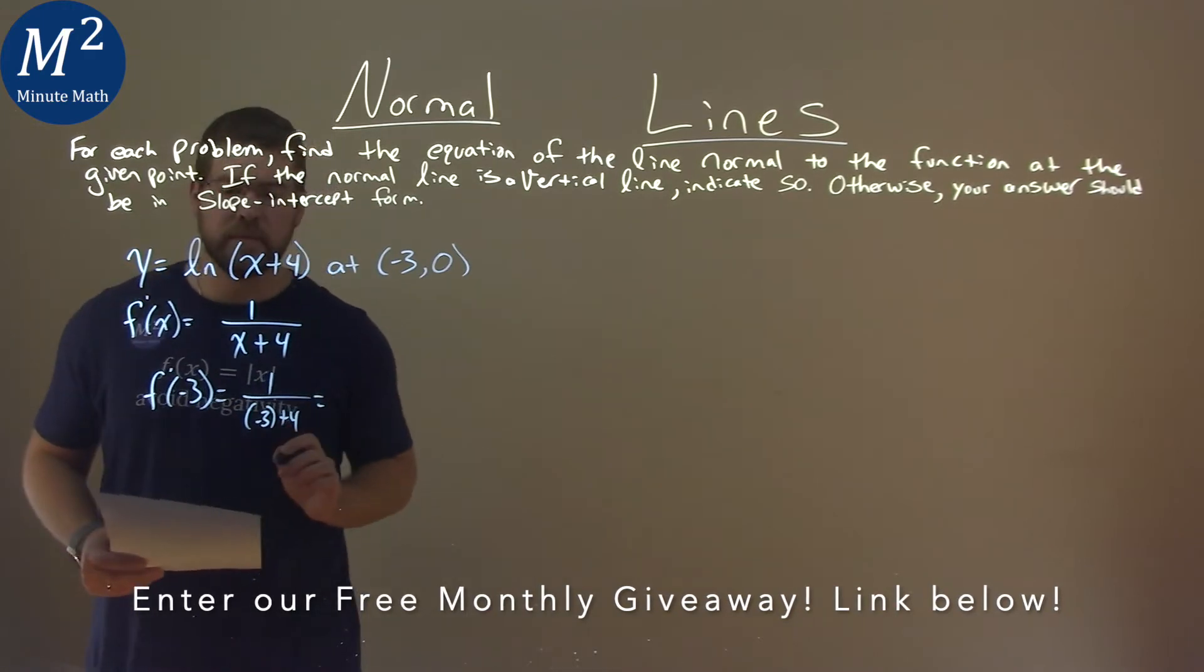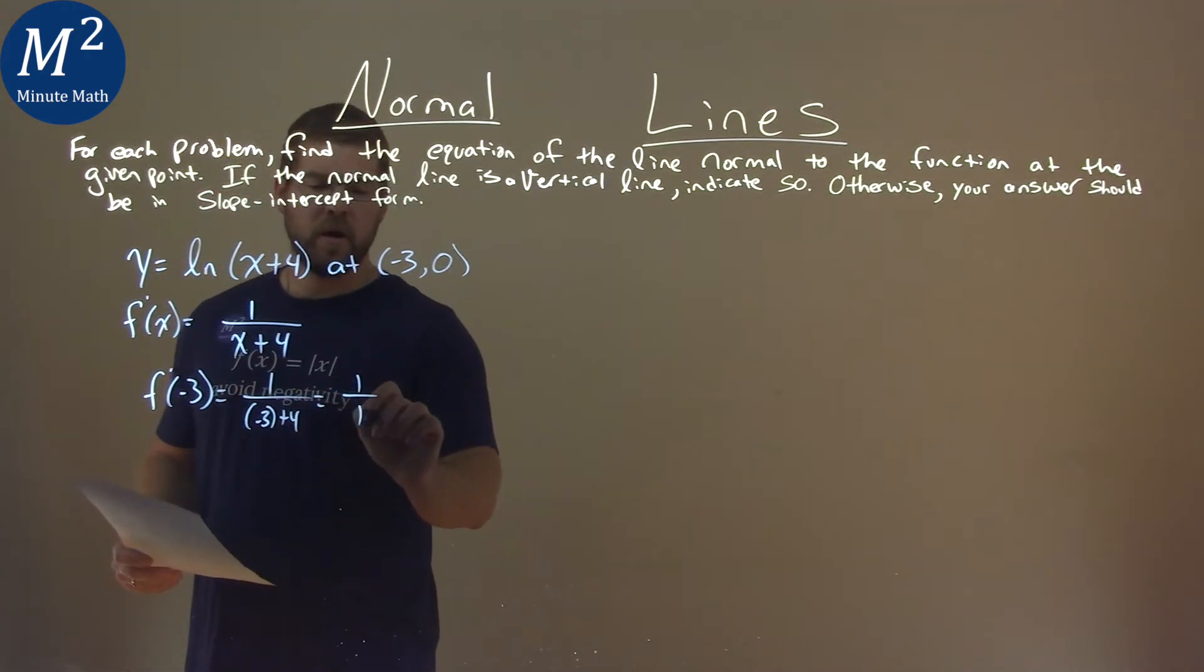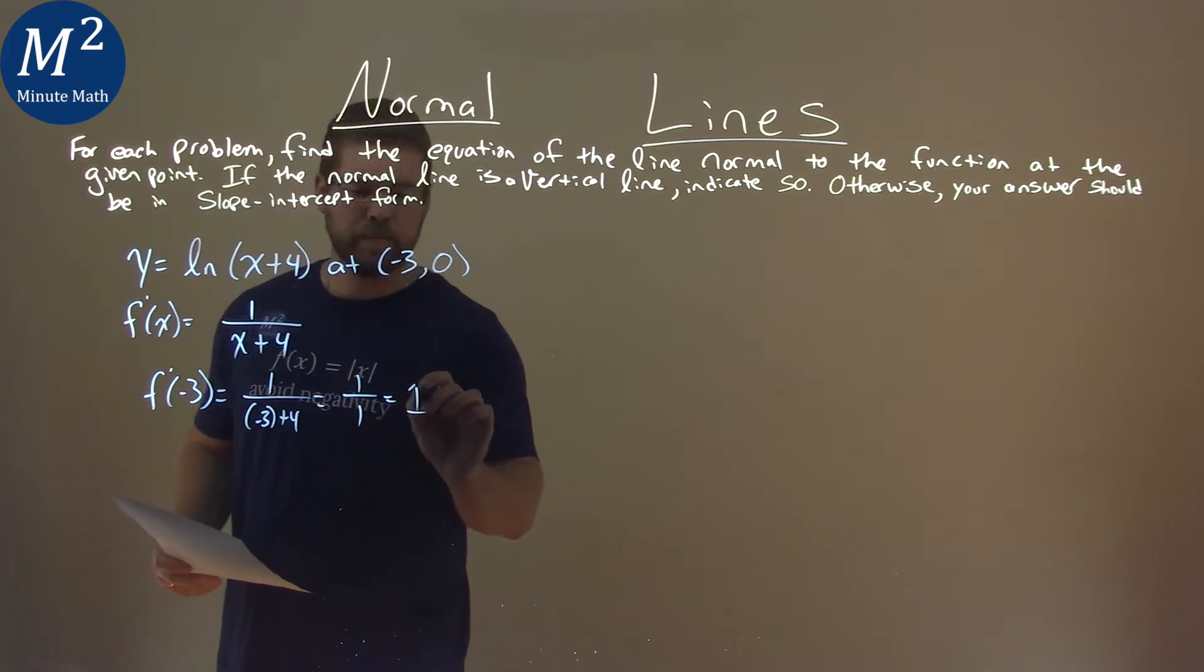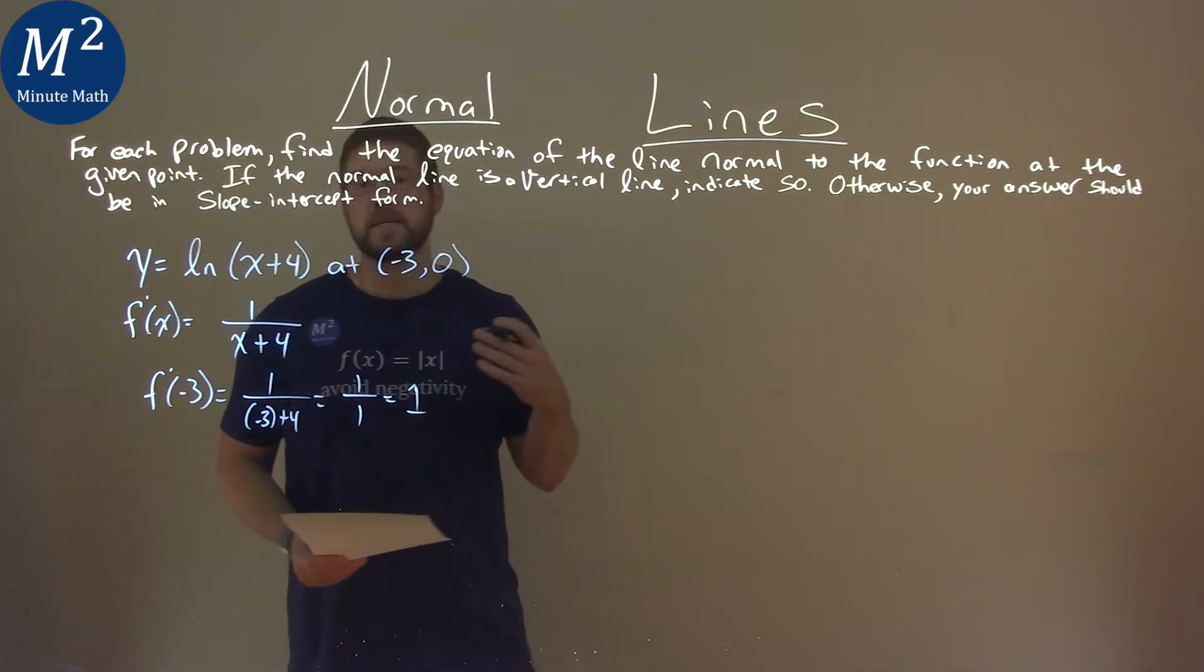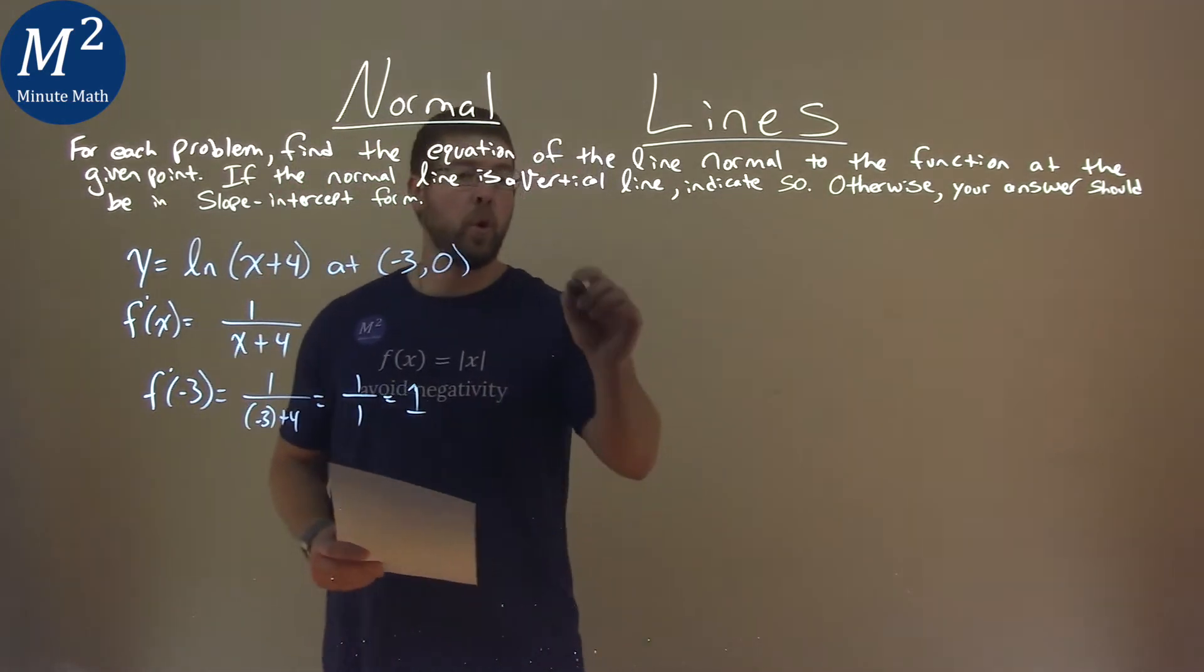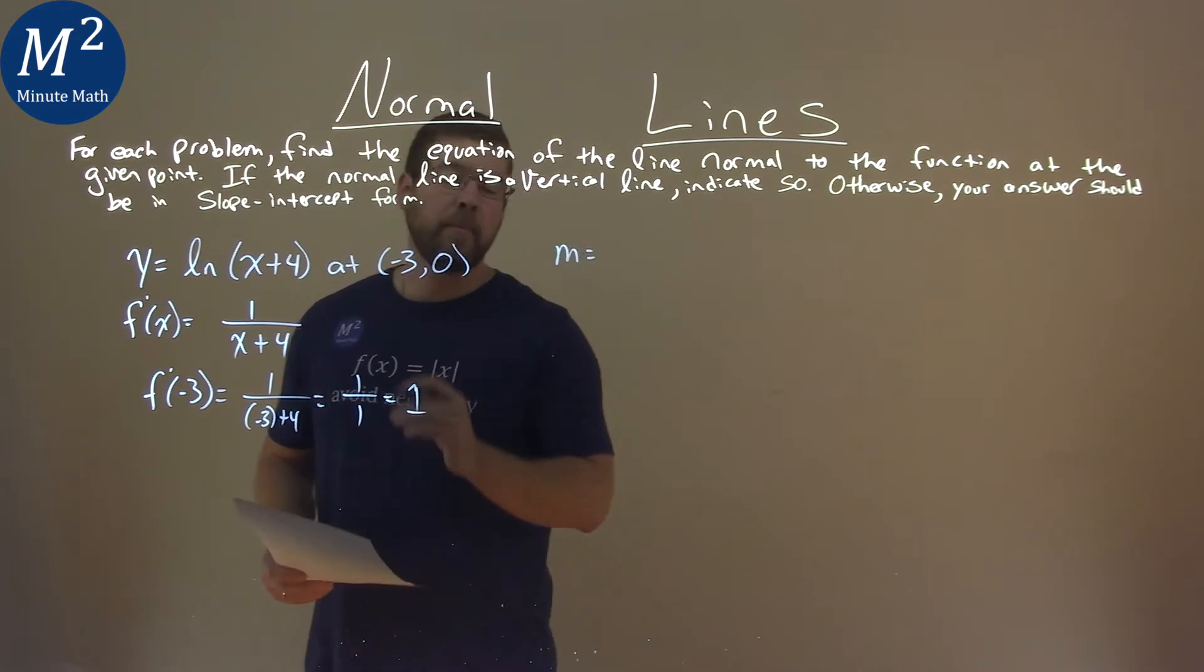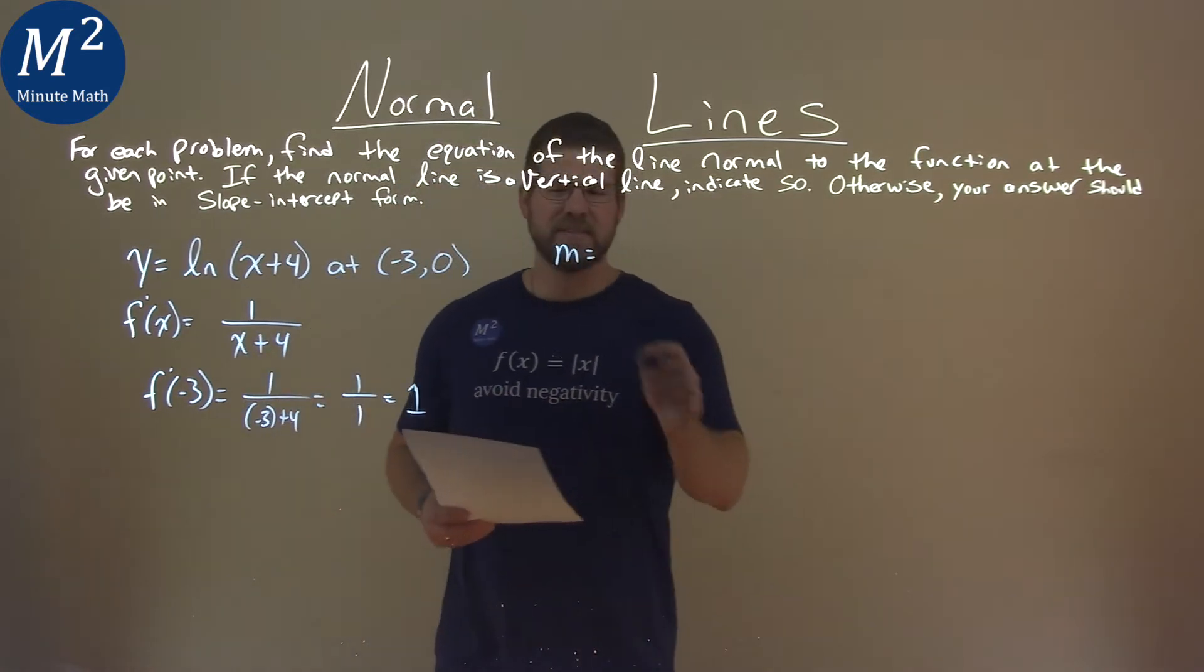And what does that come out to be? Well, that's 1 over negative 3 plus 4 is a 1, which is a 1. Well, that's the slope of the tangent line. The slope of the normal line here is the opposite reciprocal of that, which is just a negative 1.